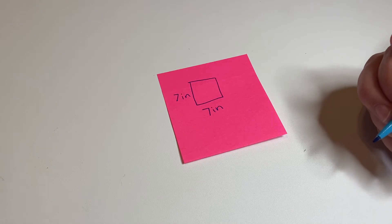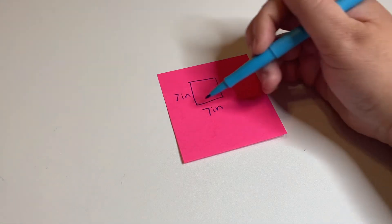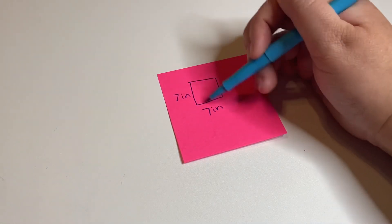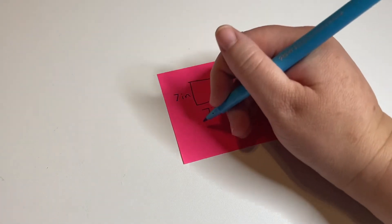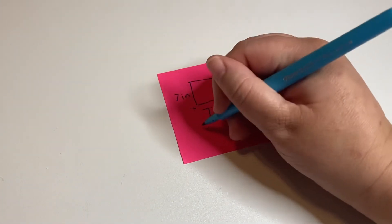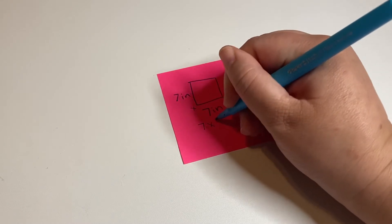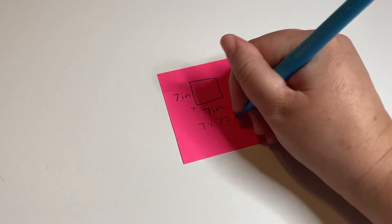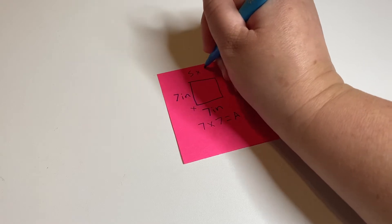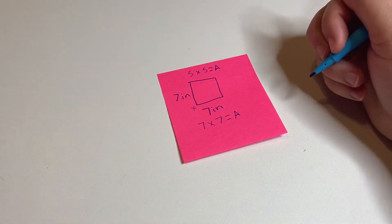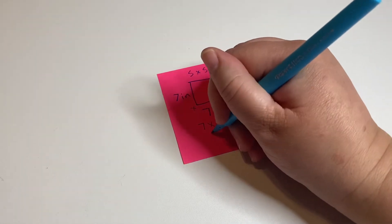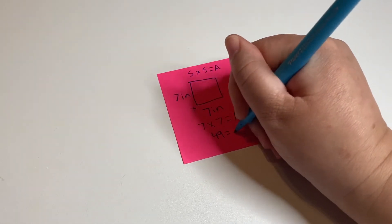Now do you remember what to do? Because remember we're talking about all these little squares inside if we cut this up. So it's going to be side times side. So seven times seven, seven times seven is equal to the area. So side times side equals area, and that is 49.